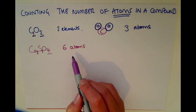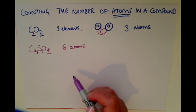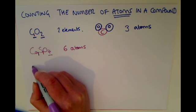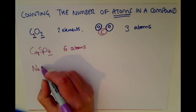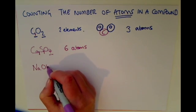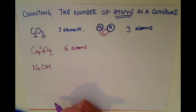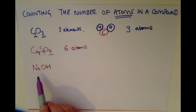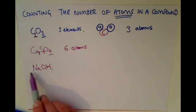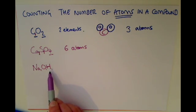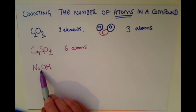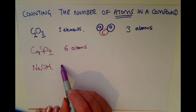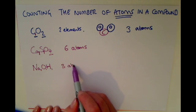One more example would be if you had NaOH for sodium hydroxide. Here, there are no numbers in the compound, which means there's one of each element. So that would be one atom of sodium, one atom of oxygen, and one atom of hydrogen, giving three atoms in total.